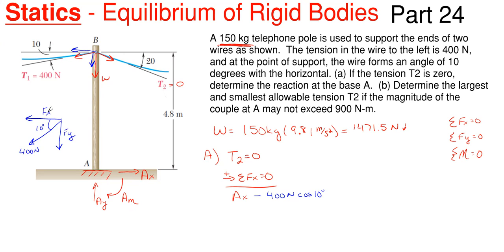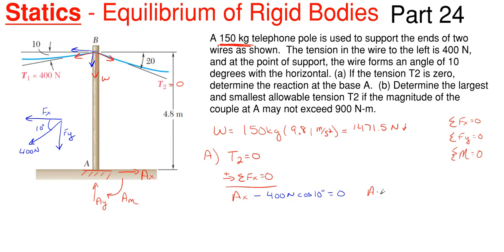We use cosine of 10 degrees because the 10 degree angle comes off the horizontal direction (the adjacent side). That's all we have in the horizontal direction. Solving: A sub x = 393.92 newtons, positive, confirming the assumed direction of to the right is correct.